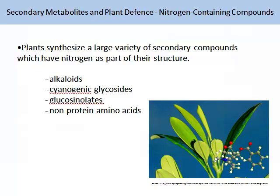Another group of secondary metabolites are those described as nitrogen-containing compounds. Plants synthesise a large variety of secondary compounds which have nitrogen as part of their structure. These groups include the alkaloids, the cyanogenetic glycosides, the glucosinolates, and the non-protein amino acids. In the rest of this lecture, we are going to look at examples of these nitrogen-containing compounds and some of their roles in plant defence.